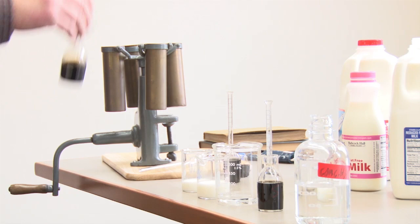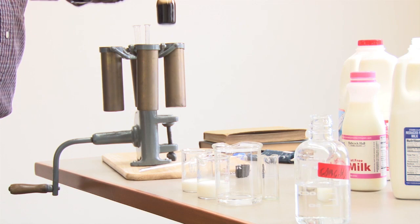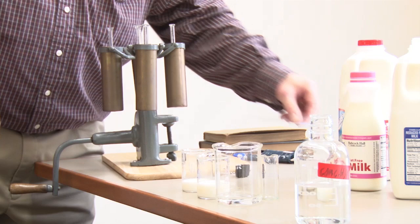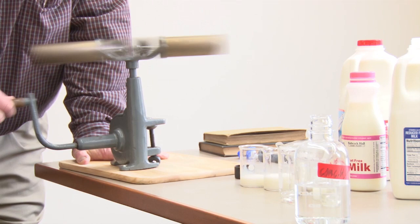Now we'll put these tubes into the Babcock centrifuge. By this time, the lipids have been torn loose from all the rest of the components of the milk, and they would, if we left this alone, eventually float to the top. But what we do now is speed up the process by centrifugal force.